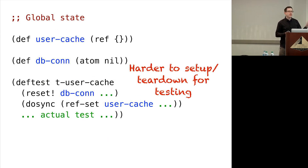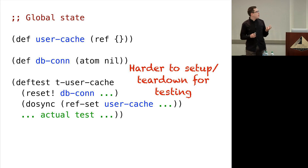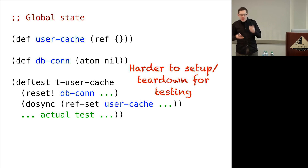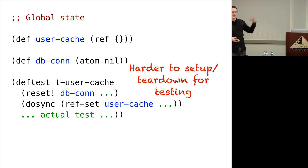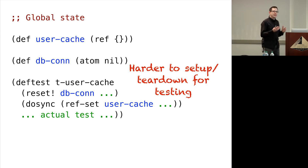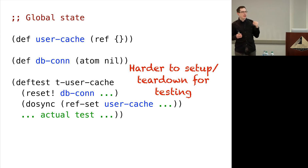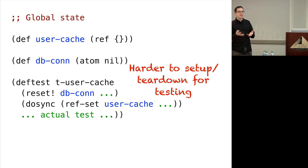One of the first downsides that comes up is that it is harder to test these things. In order to test something that uses global mutable state, you have to wrap all of your tests in code that's going to explicitly set up and tear down the state. It's very easy to forget some detail about this, because those functions don't necessarily make it obvious that they're depending on that state. Maybe the function that depends on the state is actually three or four layers deep in the call stack from the function we're trying to test. Furthermore, it's easy to have tests suddenly start influencing each other. If two tests are using something that depends on that global state, one of them might do something that causes the other test to appear to pass when it shouldn't, or to fail when it shouldn't.